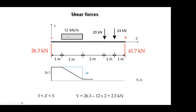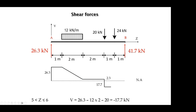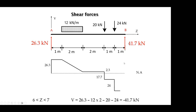Under UDLs, the variation of shear force is linear, as shown in the diagram. The next interval to evaluate is between 5 and 6. Doing the summation of forces to the left gives the reaction minus the whole UDL minus 20 kN, resulting in minus 17.7 kilonewtons — a negative shear force. For the final interval between 6 and 7, the summation of forces to the left gives a shear force of minus 41.7 kilonewtons.